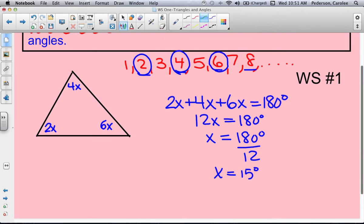So now if we come over to our picture, this expression is 2x. So 2 times 15 is 30 degrees. 4 times 15, 60 degrees.